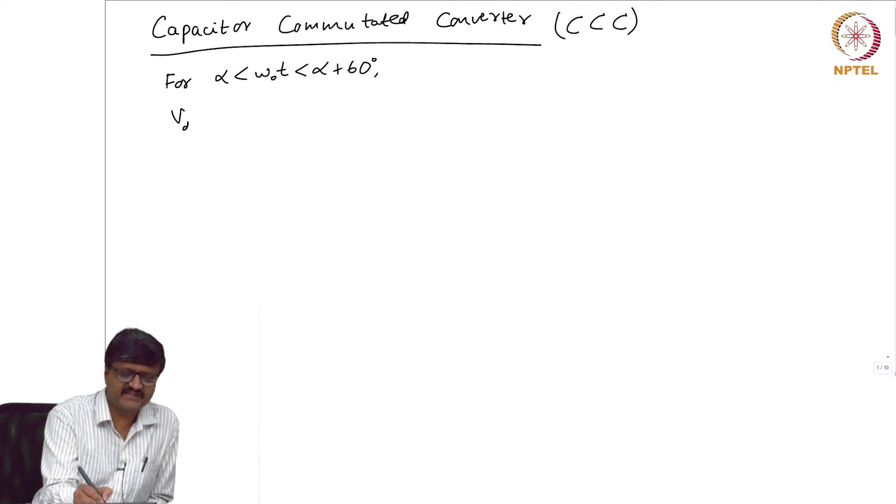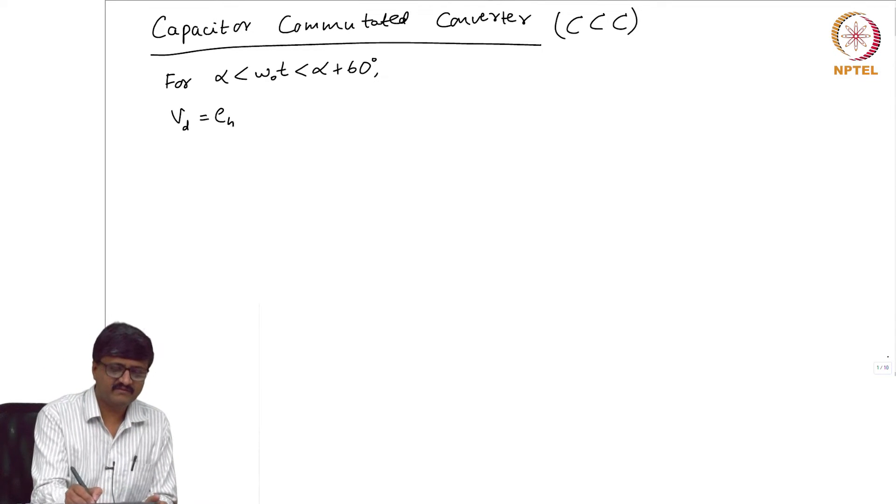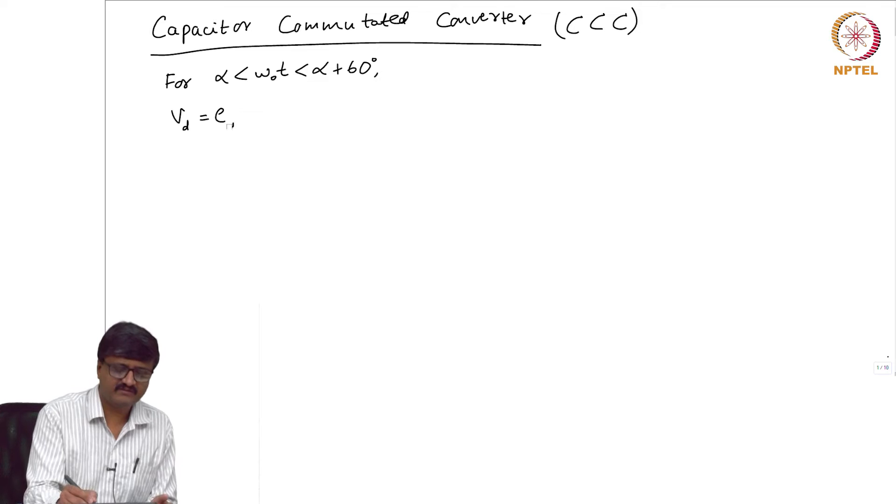What is VD, the instantaneous DC side voltage? EB minus EC, minus VB, plus VC.